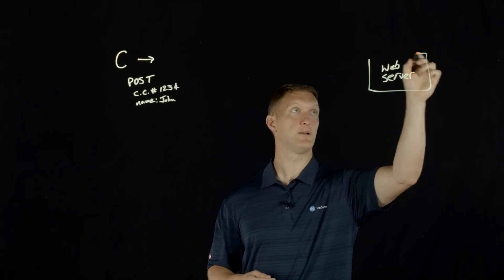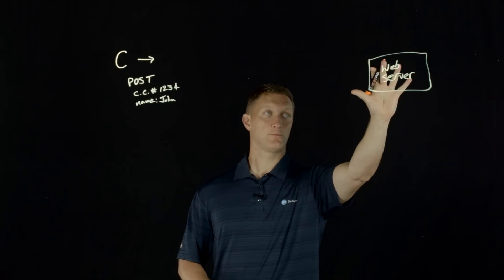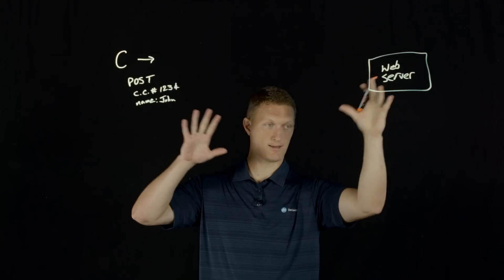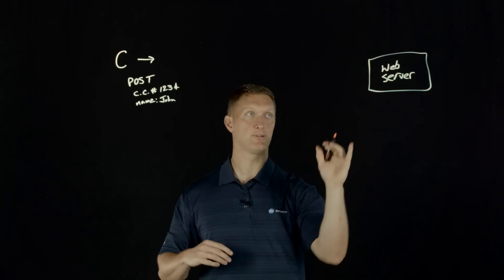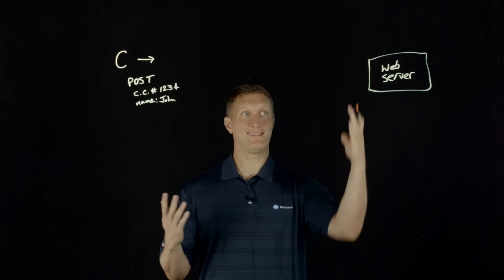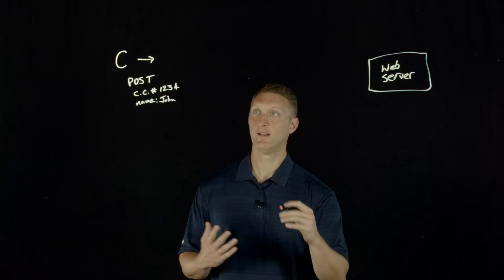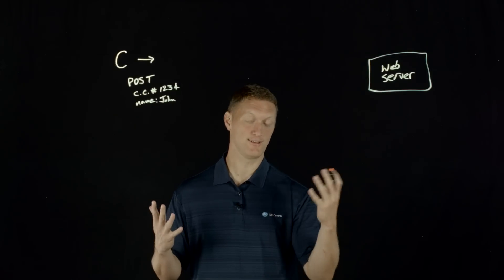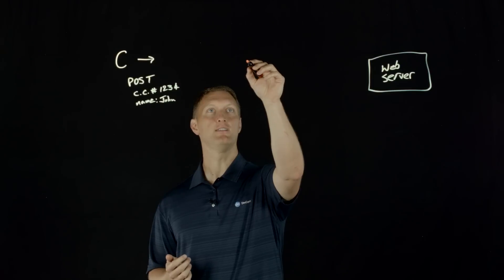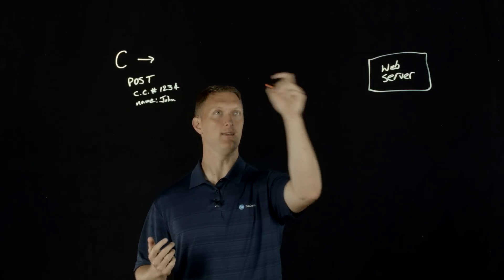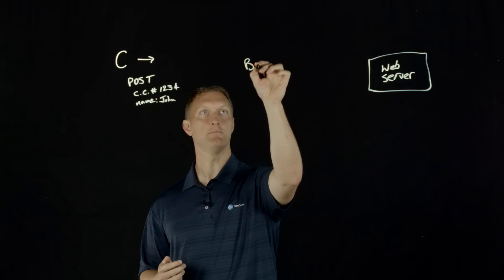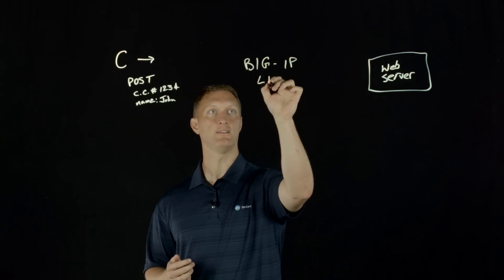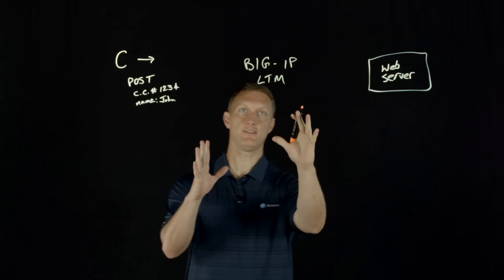You've got your web server but you don't want to have to mess with all the PCI compliance, audits, and that stuff on the web server. So how do you get all that off your web server? The solution that has been developed involves the F5 BIG-IP — specifically the LTM, the Local Traffic Manager — sitting in between the client and the web server.